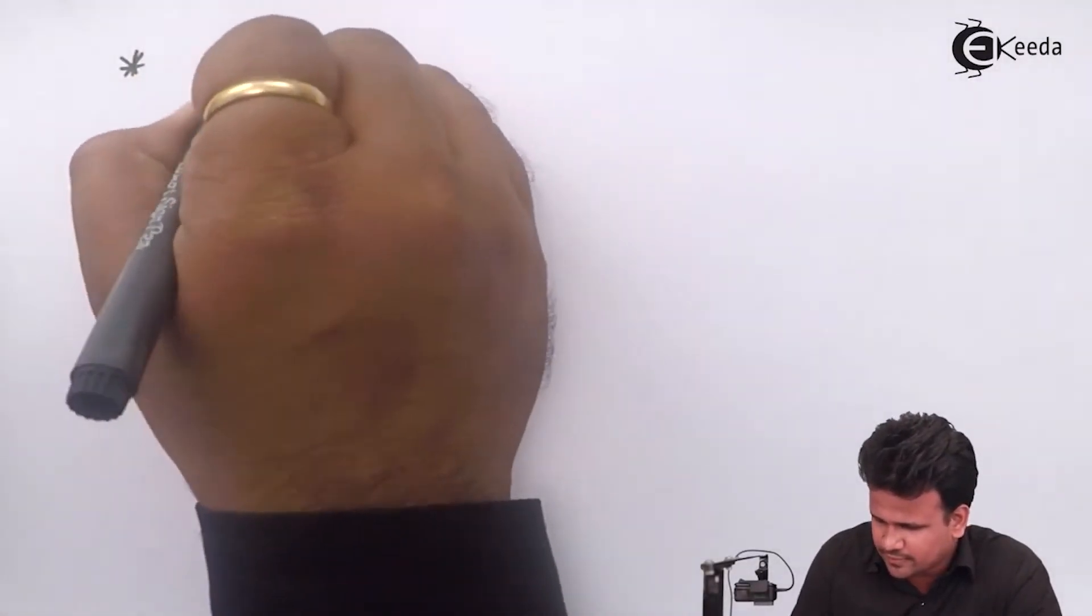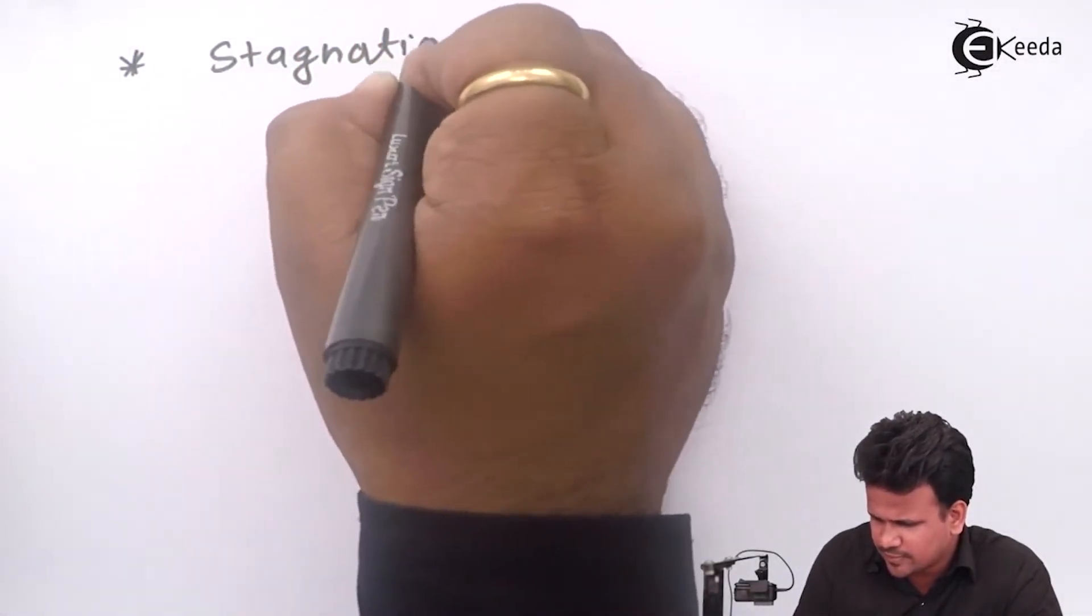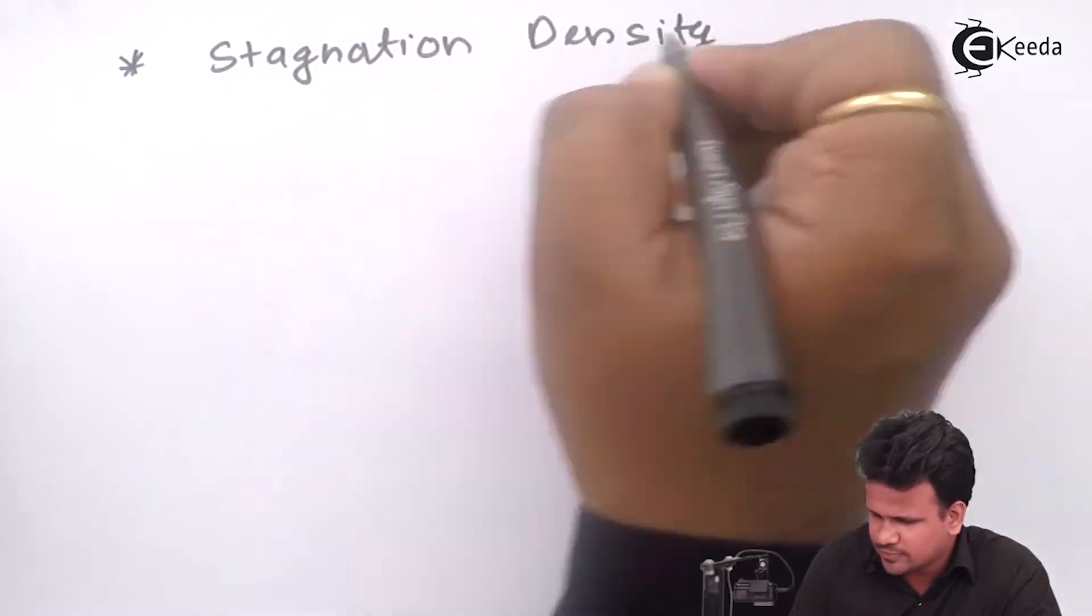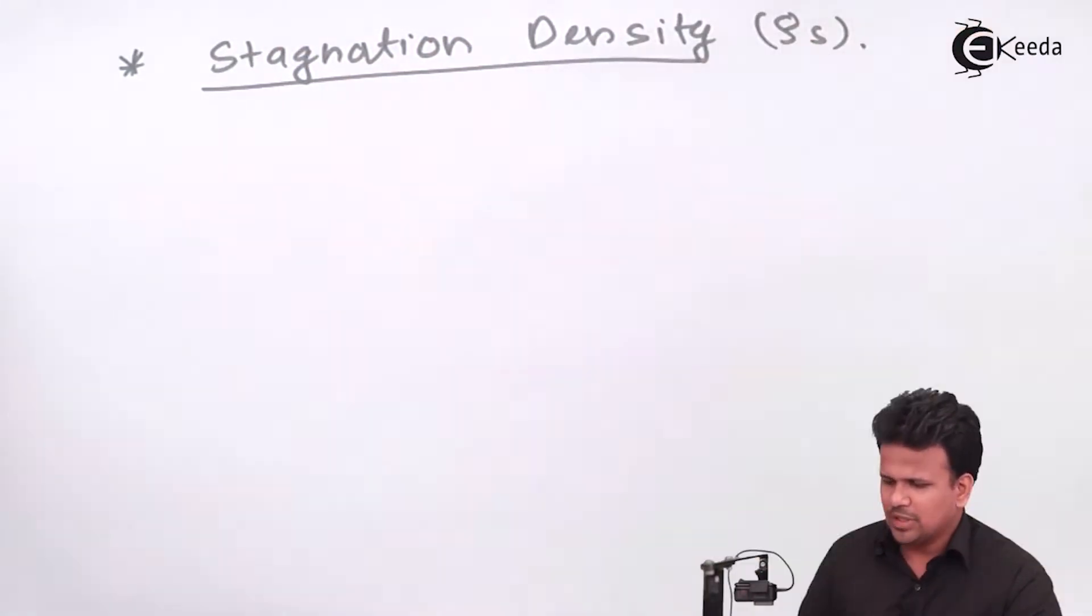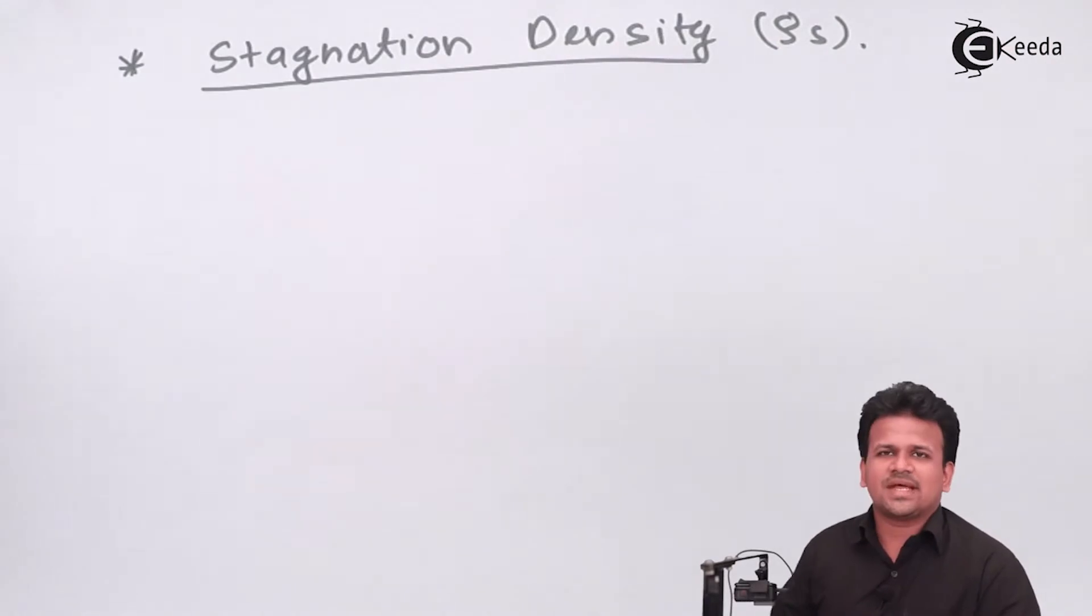Stagnation density, rho S. What is stagnation density? It is the density of the fluid near the tip of an aircraft or vehicle traveling at a very high velocity and submerged in an incompressible fluid.